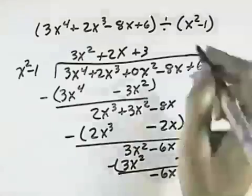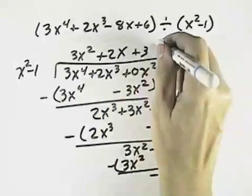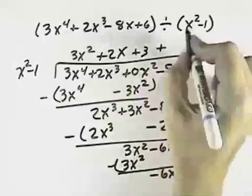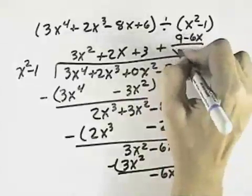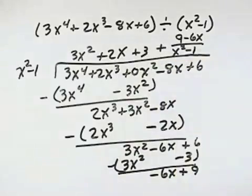And so what I have, then, is 3x squared plus 2x plus 3 plus my remainder. I can have negative 6x plus 9, or 9 minus 6x, if I reverse the 2, over my denominator of x squared minus 1.